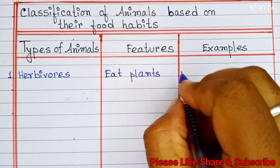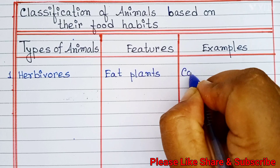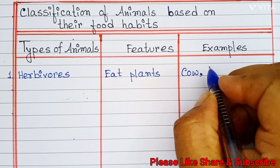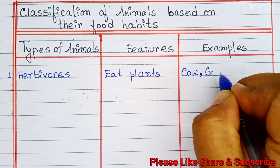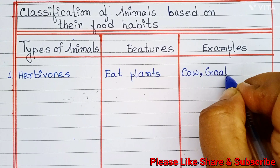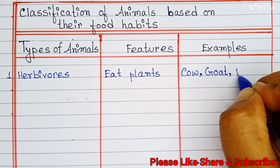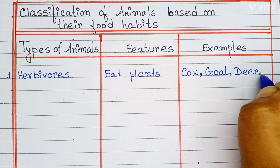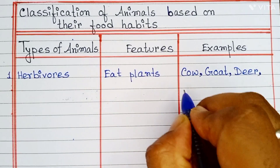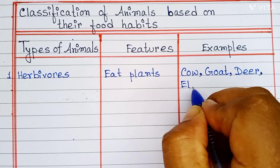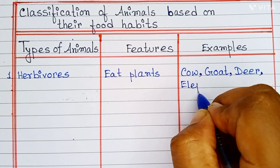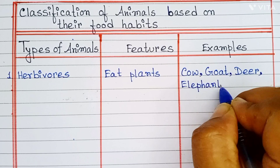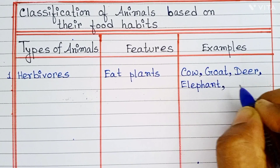Examples of herbivores are cow, goat, deer, elephant, and zebra.